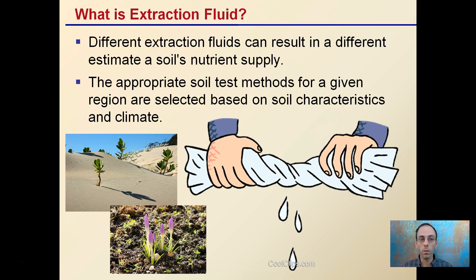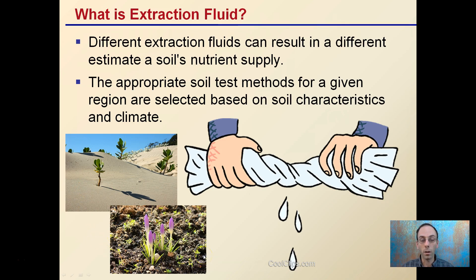There are different extraction fluids, and this can result in different estimates of soil nutrient supply. The appropriate soil test method for a given region is selected based on soil characteristics and climate. For example, the extraction fluid is going to try to wring out the nutrients in that soil. In a very sandy environment, you might use a different extraction fluid than in a soil with higher organic matter.